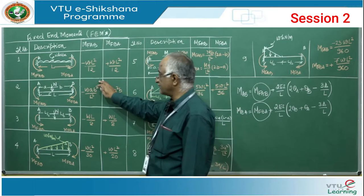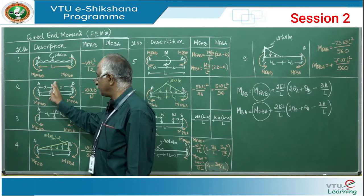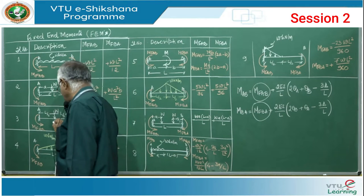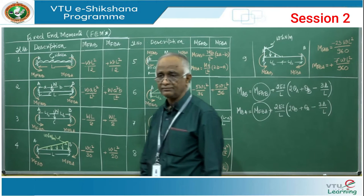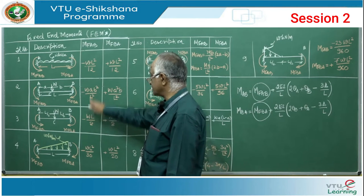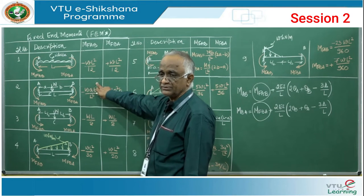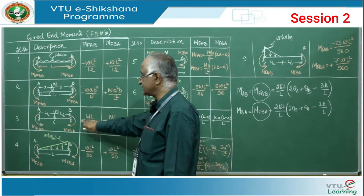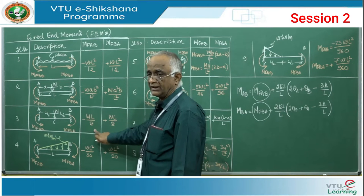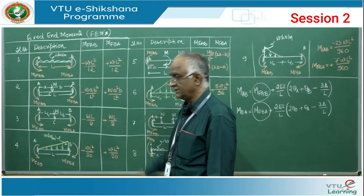For the special case where A equals B, meaning the load is placed exactly at mid-span, substitute A equals L/2 and B equals L/2. You get M_FAB equals minus WL/8 and M_FBA equals plus WL/8.